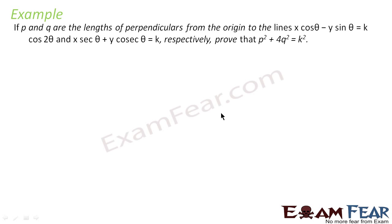The question says: if p and q are the lengths of perpendiculars from the origin to the lines x·cosθ − y·sinθ = k·cos2θ and x·secθ + y·cosecθ = k respectively, we have to prove that p² + 4q² = k².